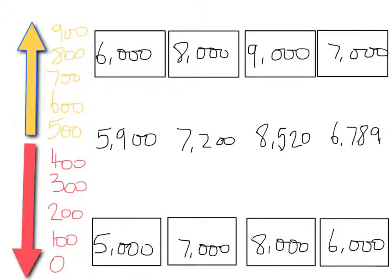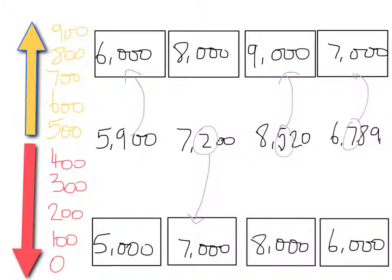Here are your multiples of a thousand for each number. The nine hundred of our first number tells us to round five thousand nine hundred up to six thousand. The two hundred of seven thousand two hundred tells us to round down to seven thousand. The five hundred of eight thousand five hundred and twenty tells us to round upwards to nine thousand. And the seven hundred of six thousand seven hundred and eighty-nine tells us to round upwards to seven thousand.